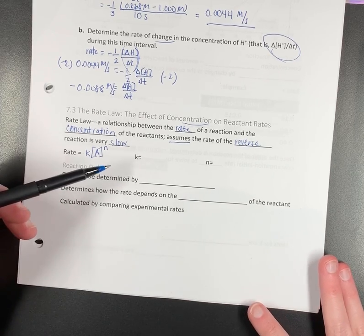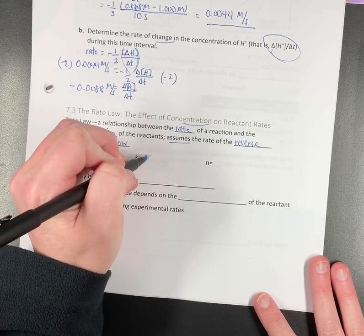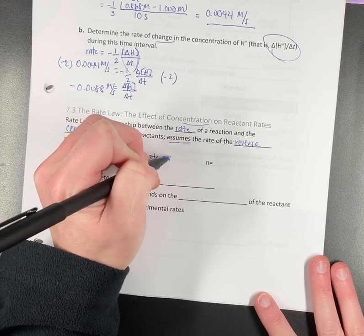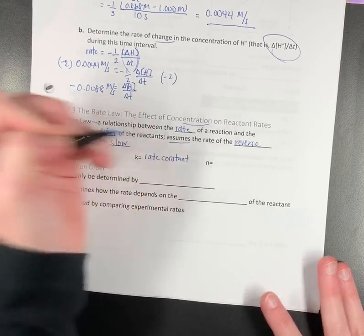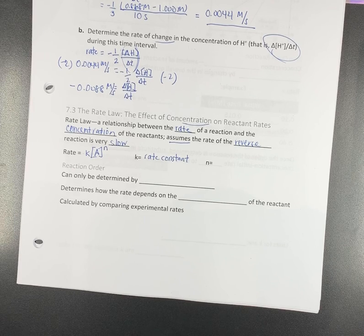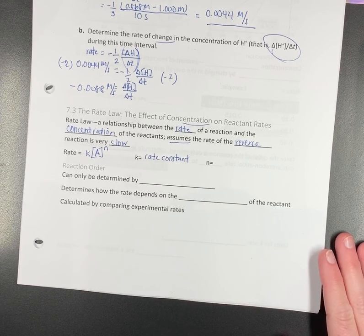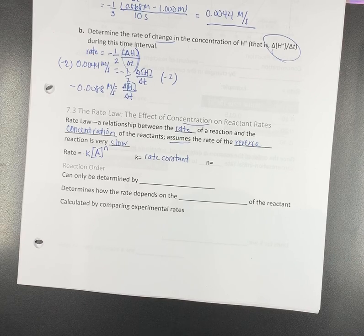So lowercase K is going to be what we refer to as the rate constant. You know it, love it. The rate constant is not going away. We're going to do it all the time. Ask somebody who's already had organic, the rate constant does not go away.